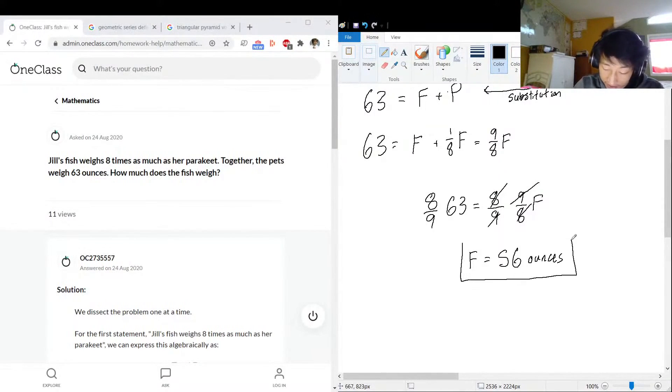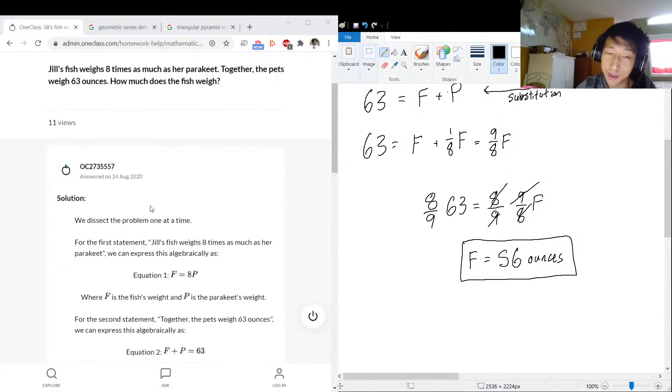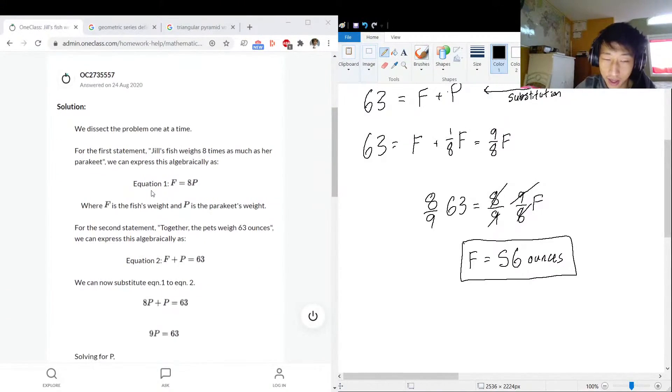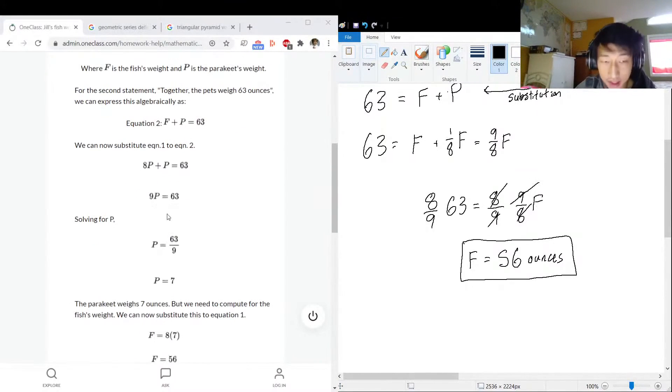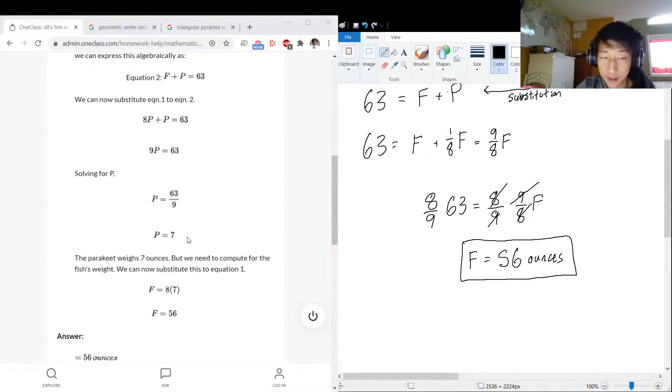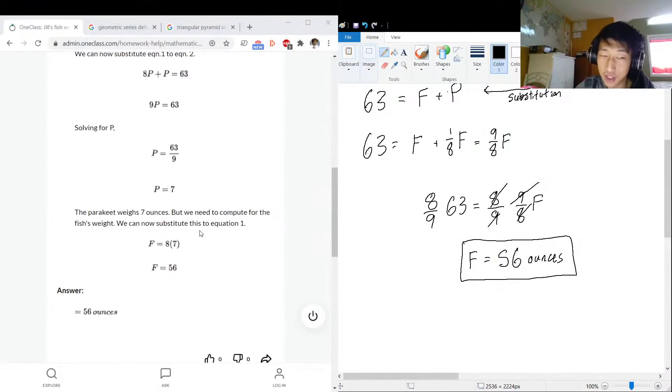The fish is 56 ounces. How many pounds is that? 16 ounces in 1 pound, that's 3 and a half pounds of fish. That's a heavy fish, maybe not a shark, maybe a baby shark. So the fish weighs 56 ounces, and the parakeet is going to be much lighter at 7 ounces. So the parakeet is like half a pound, and the fish is 3 and a half pounds.